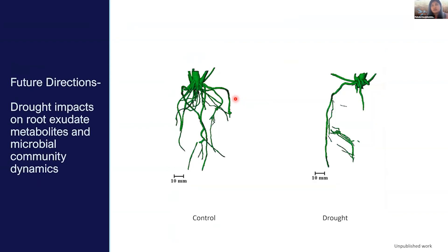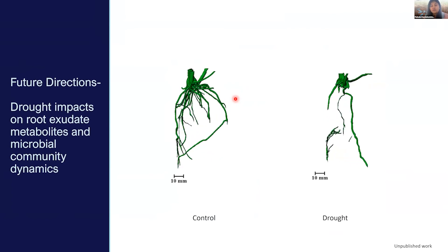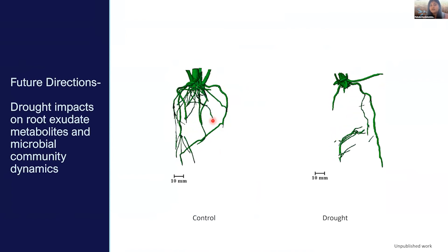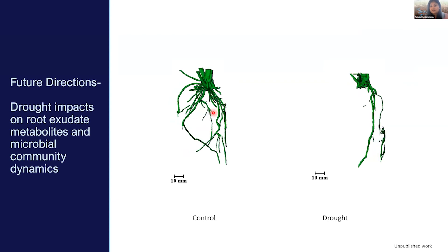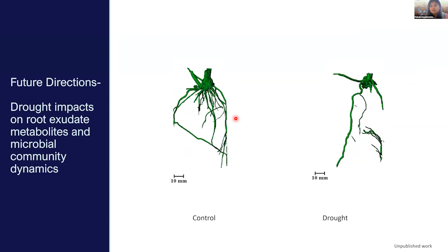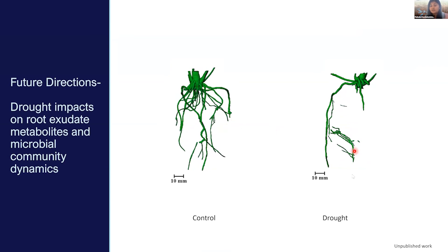One of the future directions we are taking is looking at the impacts of drought — how does the root system behave, and how do the microbial and metabolite profiles change along the root system? On your left is a control root, and these are comparable five-week-old sorghum roots grown in a local field soil. You can start to see differences in root length, size, and number of roots in these XCT images. On the right is the drought root. We are currently working through the metabolite and microbial information to understand those differences.